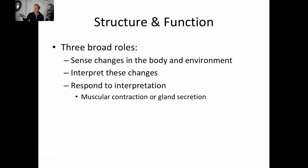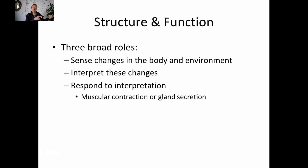For example, if I touch a hot stove, sensory information is sent to my central nervous system, processing happens, and the appropriate response is to get my hand off that hot stove. So I have muscular contractions to do that. Besides muscular contractions, we could also have gland secretion happening internally to aid that response.